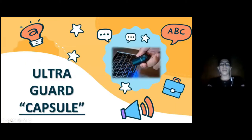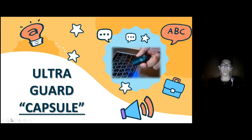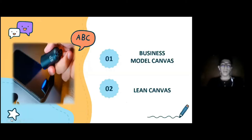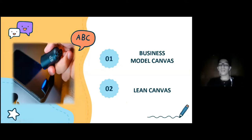El día de hoy vamos a hablarles sobre un producto nuevo, innovador y que recién ha sido lanzado al mercado, que es el UltraWard Caxo. Nuestra exposición se basará en dos puntos: el primero es el Business Model Canvas y el Lean Canvas.